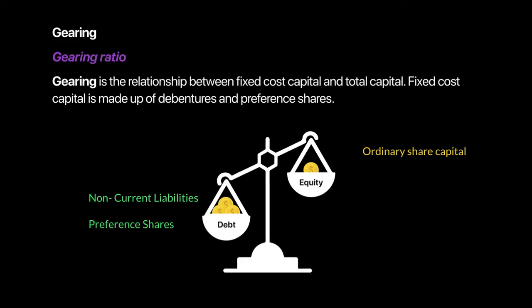Gearing is also a measure of financial risk for ordinary shareholders. If a greater proportion of the company is financed by fixed cost capital, that is concerning because those financers require fixed interest payments and dividends, and the money must be repaid — creating a significant future outflow. Ordinary shareholders do not require repayment, so gearing directly impacts their financial risk and return.